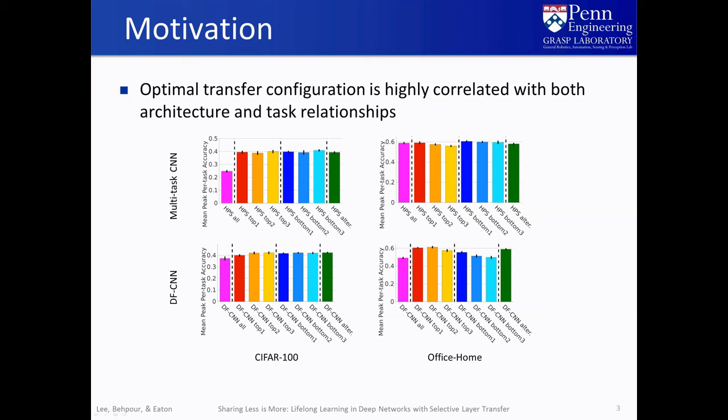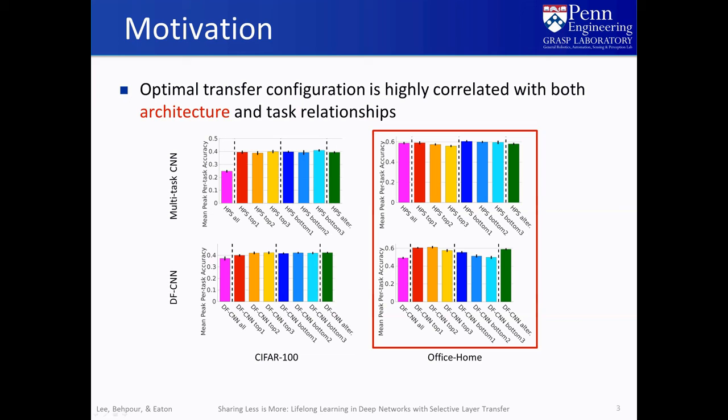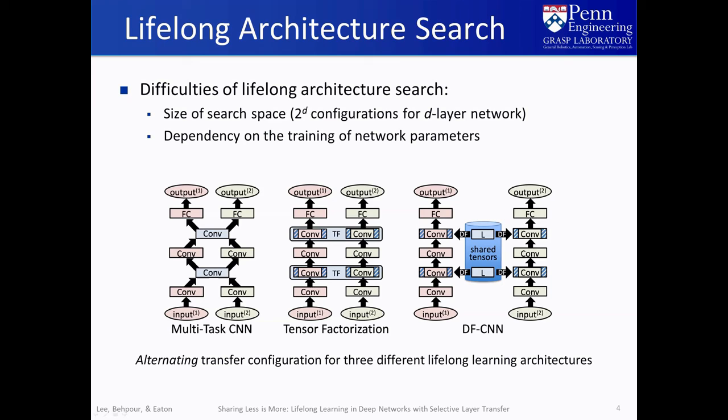The choice of layers to transfer is called a transfer configuration. To determine the effect of transfer configuration on lifelong learning, we trained and evaluated different transfer configurations on two lifelong learning architectures on two datasets. We consider sharing only the top-most layers, sharing the bottom-most layers, and an alternating configuration of transfer-based and non-transfer layers. We see that different transfer configurations have very different levels of performance. Moreover, the best transfer configuration varies based on the transfer mechanism and similarity between tasks.